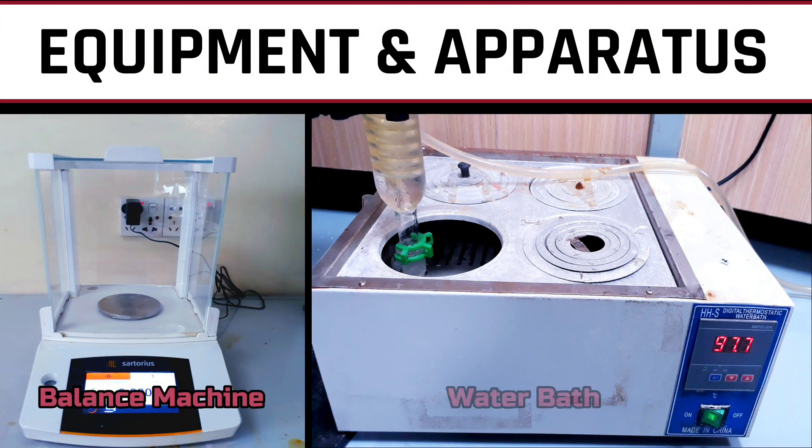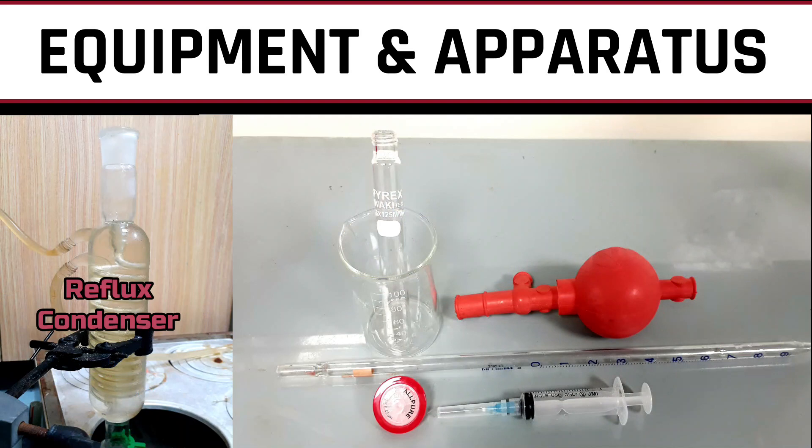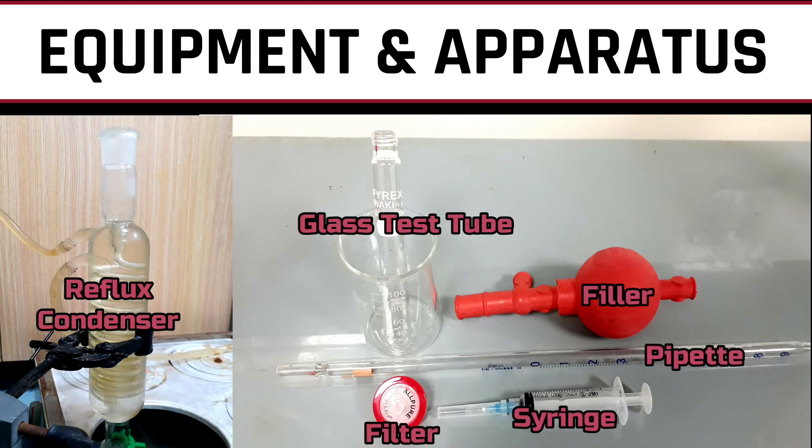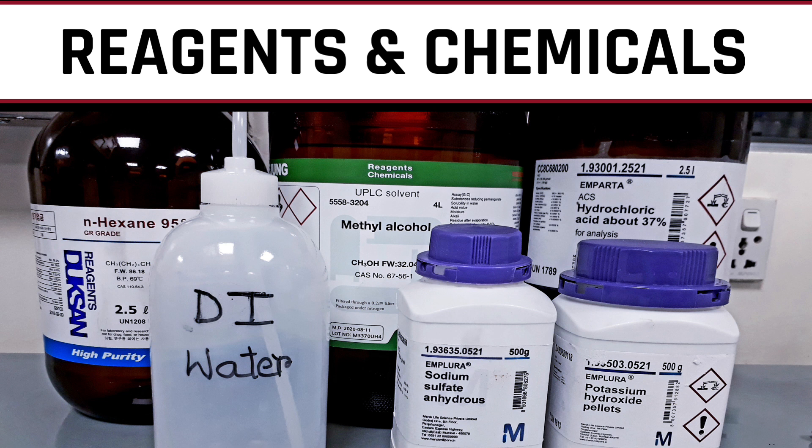Throughout the procedure, we need a balance, water bath, reflux condenser, test tube, pipette with filler, syringe with filter, N-hexane, methanol, hydrochloric acid, deionized water, sodium sulfate anhydrous, and potassium hydroxide pellets.